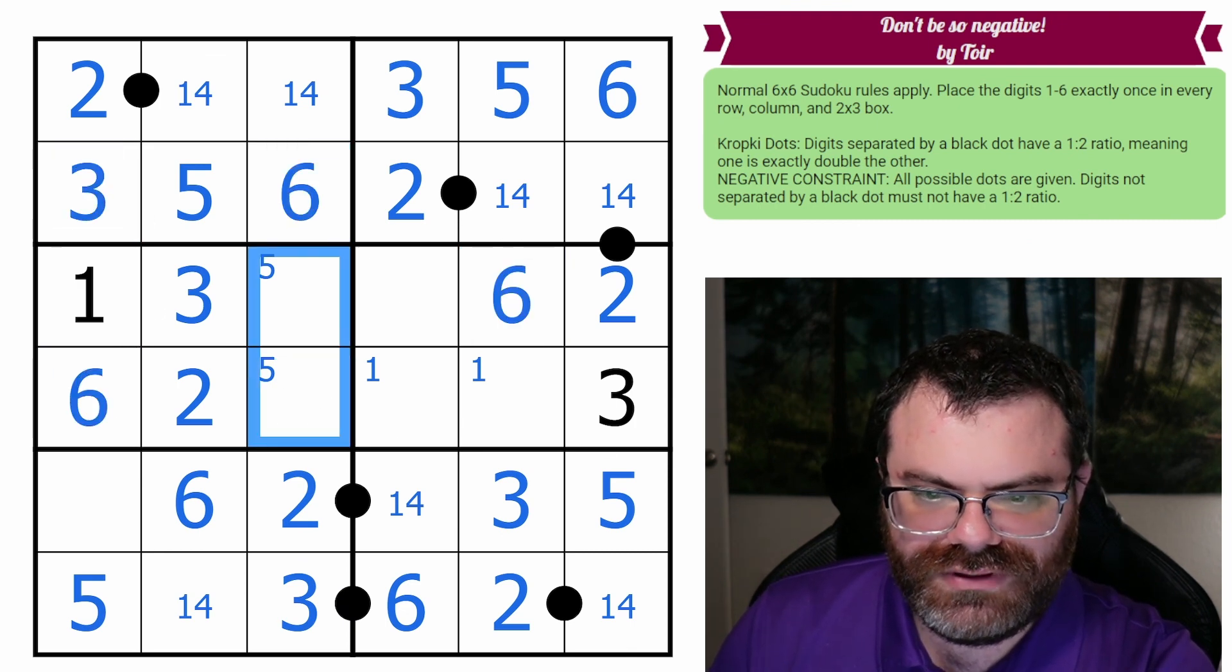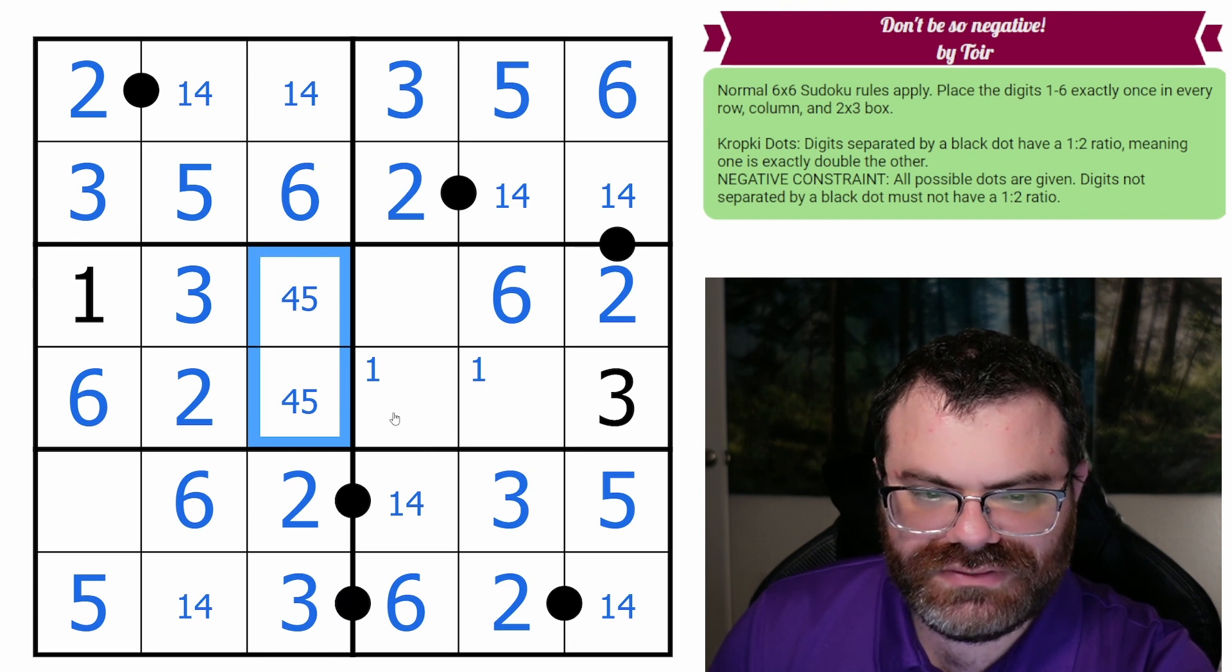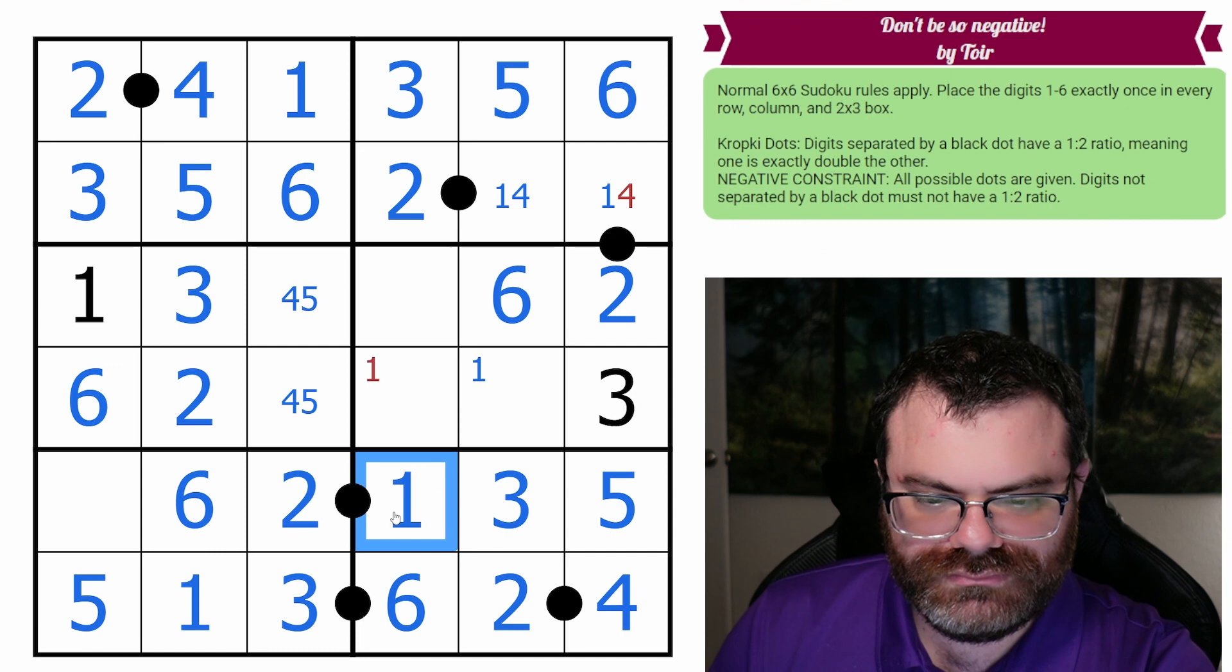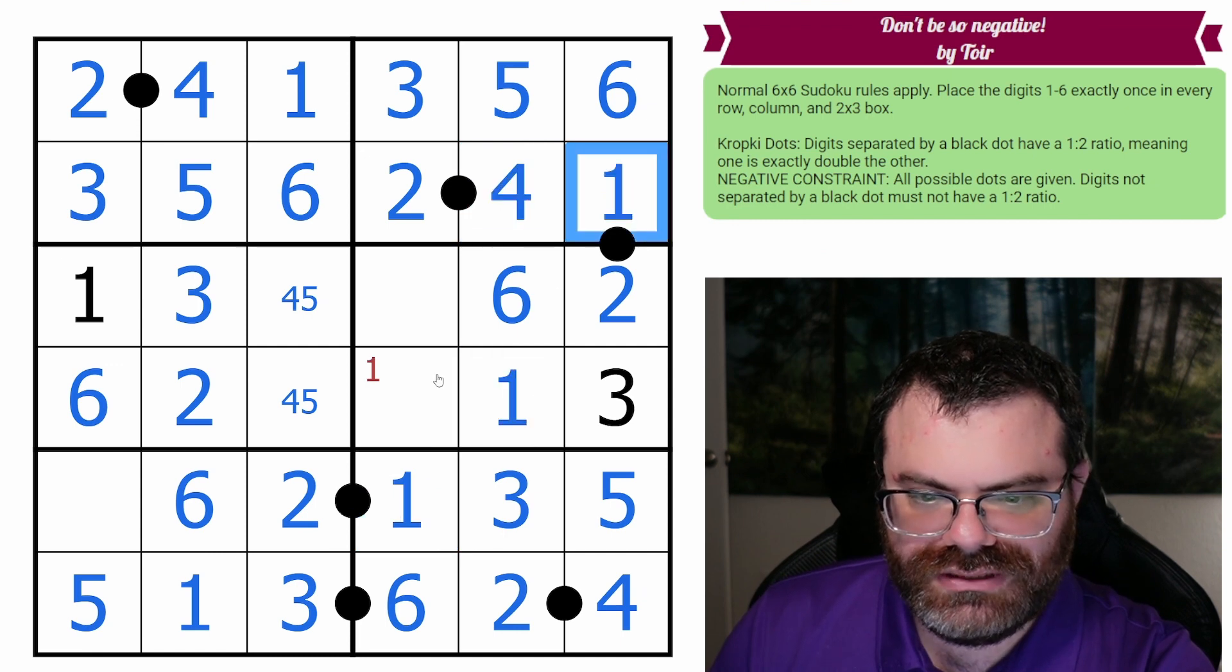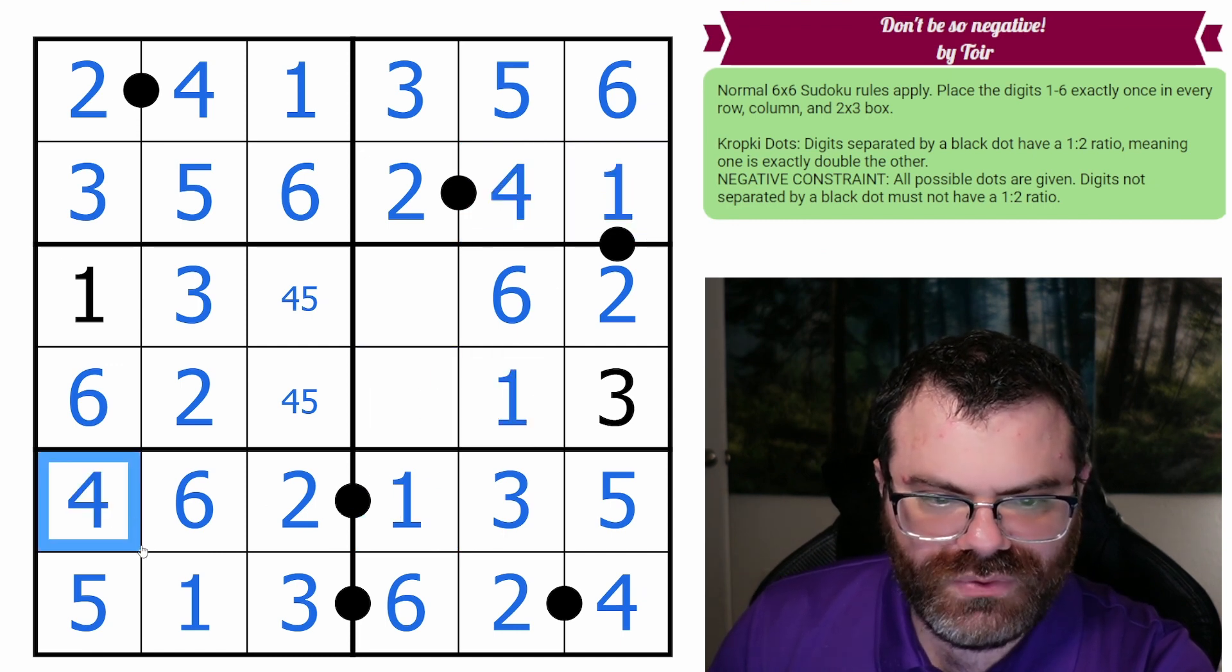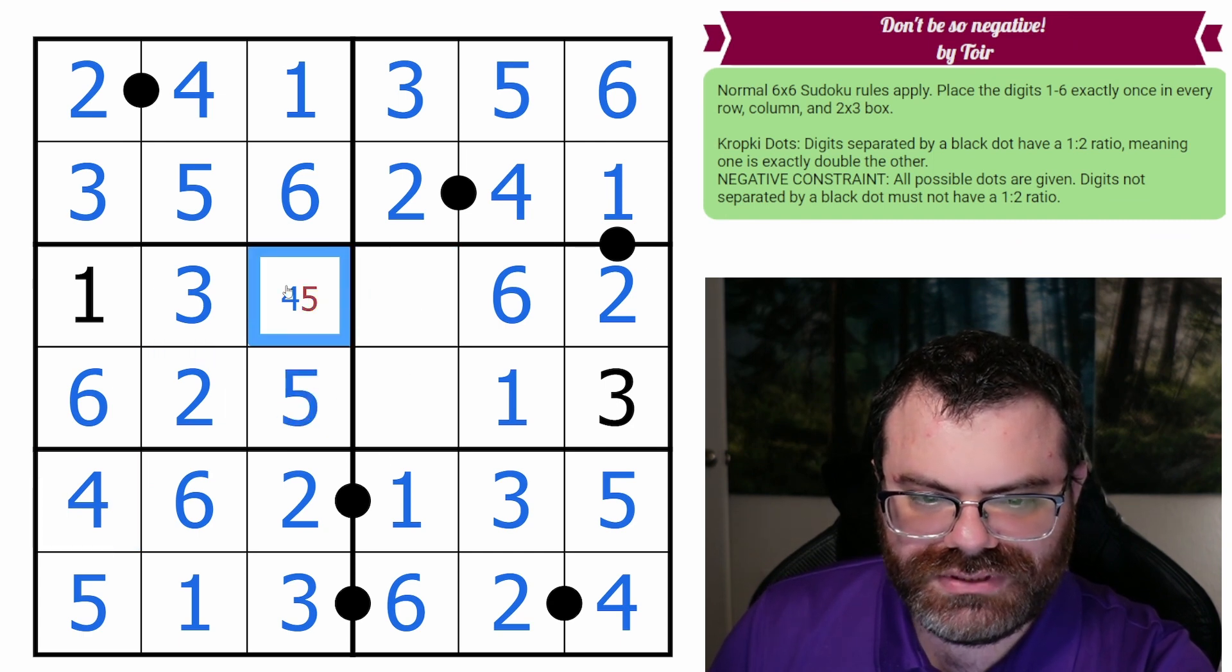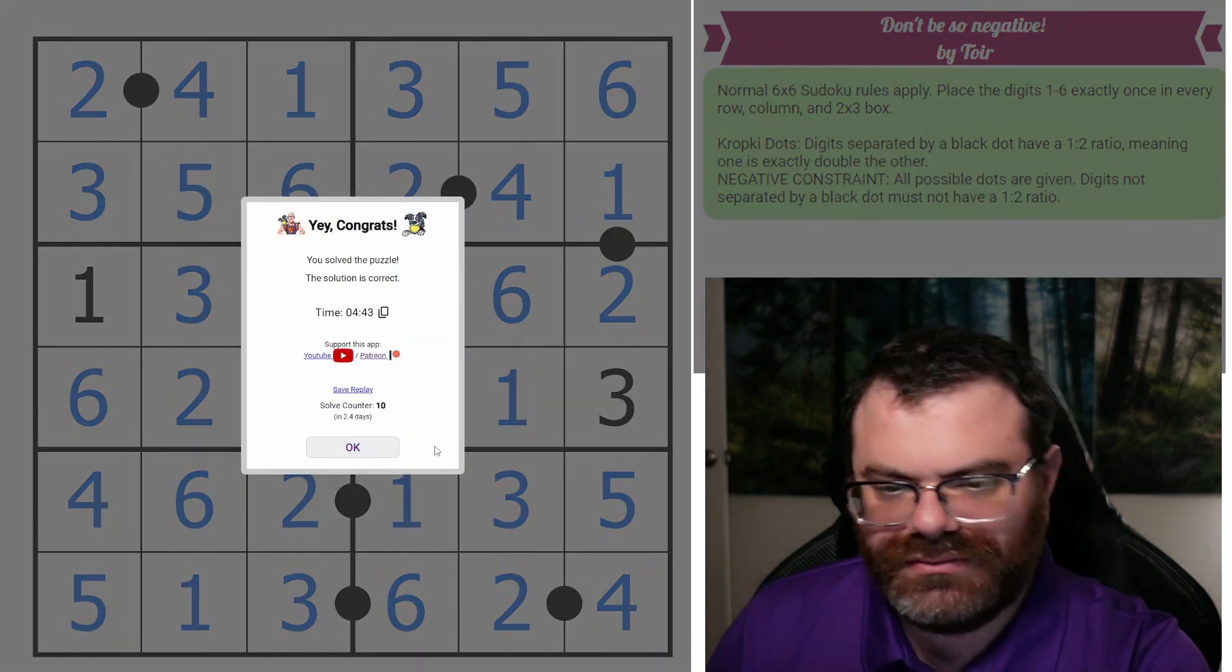What do we need here? We need a four and a five. That's four and five. And this is the one. Just cleans up everything. This is a four. And then these are, oh, two can't go next to four. So that's five and four. And then these are five and four. Nice.